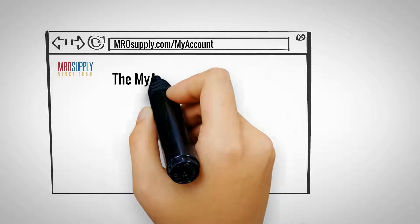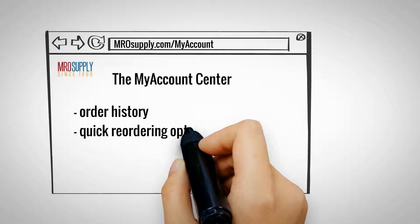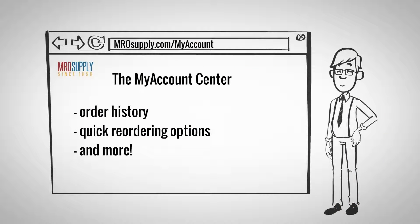The My Account Center contains order history, quick reordering options, and more. The status of your orders and past quotes can all be accessed from this section.